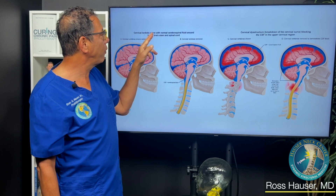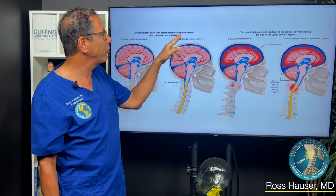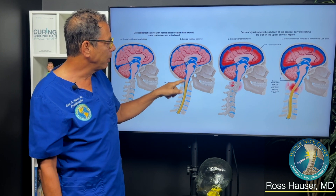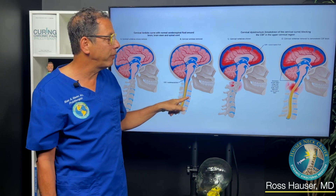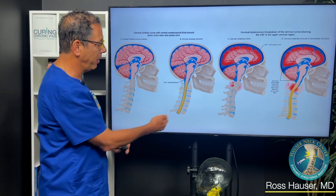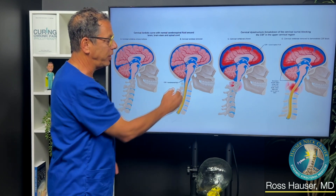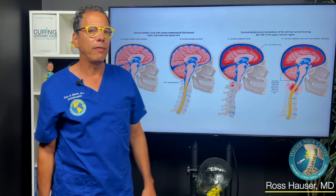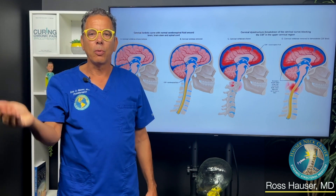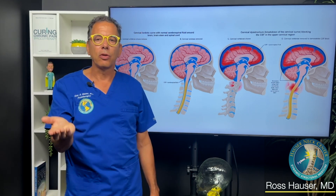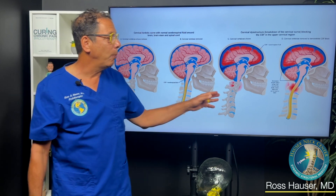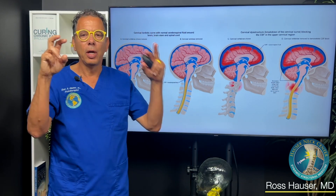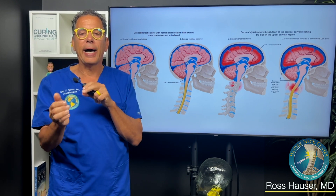This over here is a cervical lordotic curve with normal cerebral spinal fluid around the brain, the brainstem, and the spinal cord. The blue here is the cerebral spinal fluid. When you get ligament damage in the neck, the neck structure breaks down — what we call cervical distructure — and you're going to get disruptions in the cerebral spinal fluid flow, or what you might call cerebral spinal fluid blocks.